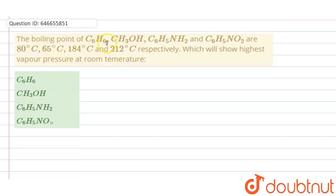The boiling point of C6H6, CH3OH, C6H5NH2 and C6H5NO2 are 80 degrees Celsius, 65 degrees Celsius, 184 degrees Celsius and 212 degrees Celsius respectively. So these are the boiling points of the following compounds. Which will show the highest vapor pressure at room temperature?